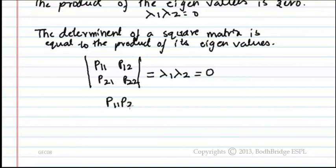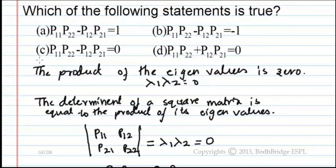So P11 into P22 minus P12 into P21 equals 0. From the given options, the right answer is C.